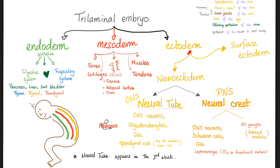That was the story of the neuroectoderm. How about the surface ectoderm? It's not necessarily part of the nervous system. So: epidermis of the skin; hair and nails of the skin; sweat glands, mammary glands, parotid glands; lens of the eye; olfactory epithelium of the nose; epithelium of the mouth. The mouth and the inner cavity are in close proximity with the outside world — upper orifice and lower orifice.